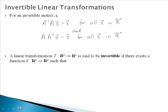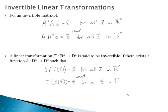A linear transformation T mapping from Rn to Rn is said to be invertible if there exists a function S from Rn to Rn such that S of T of x equals x for all x in Rn, and T of S of x equals x for all x in Rn. We call S the inverse of T if those two properties hold, and we can write it as T to the negative one power.